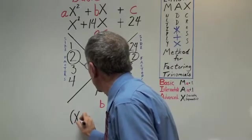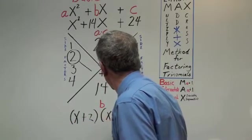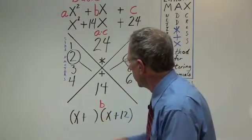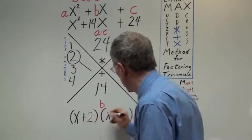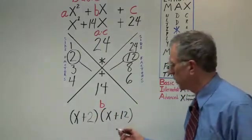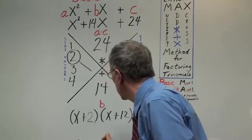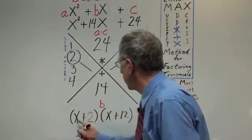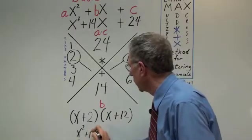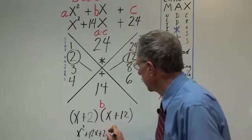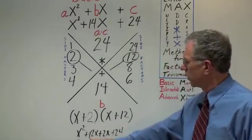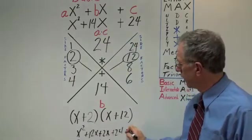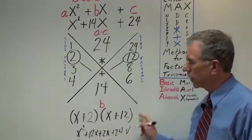You have x plus 2 times x plus 12. Now if you want to check, the way that you would check is to use FOIL. FOIL allows you to multiply binomials, which is what we have here. The first is x times x, or x squared. The outer is x times 12, or 12x. The inner is 2x, and the last is 24. Now we know that 12x plus 2x is 14x. So this is identical to what we started with, and we have checked our answer.